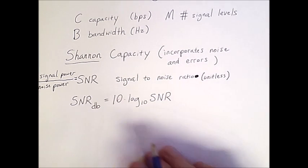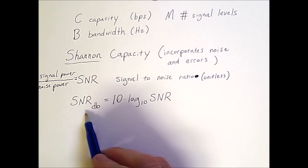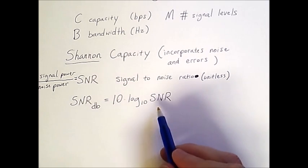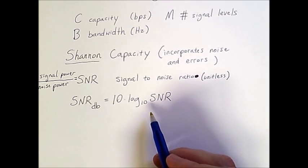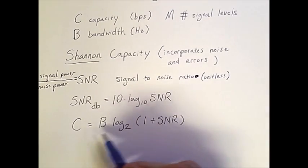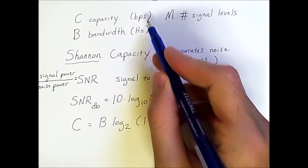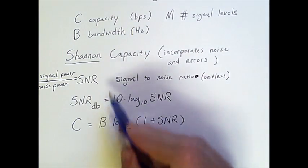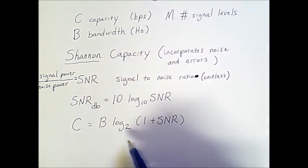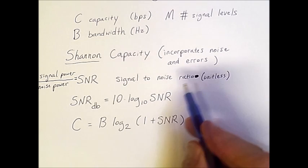Now this is not Shannon's formula yet, but we do need this to do Shannon's formula. This SNR in decibels is what we are able to measure, but this unitless SNR is what we need for Shannon's formula, which looks like the following. So this formula once again has C and B, where C is the capacity measured in bits per second, and B is the bandwidth measured in hertz. And then we have log base 2 of the quantity 1 plus the unitless SNR.